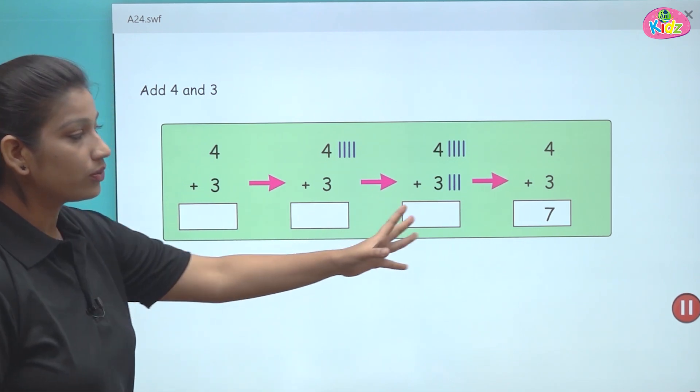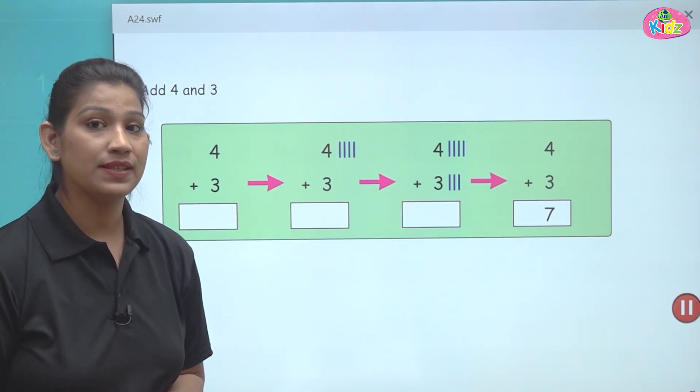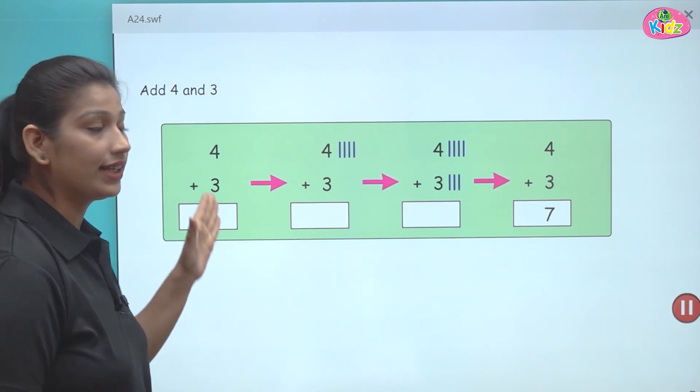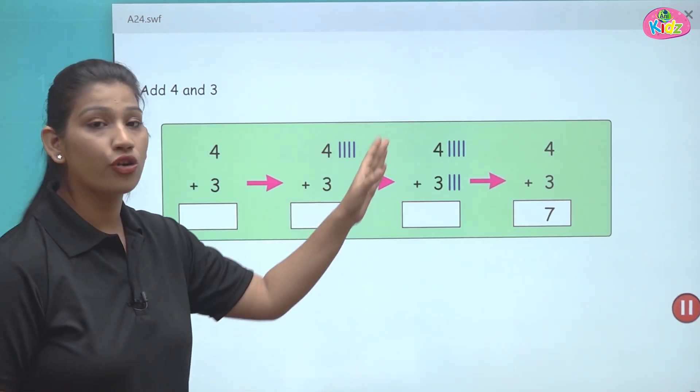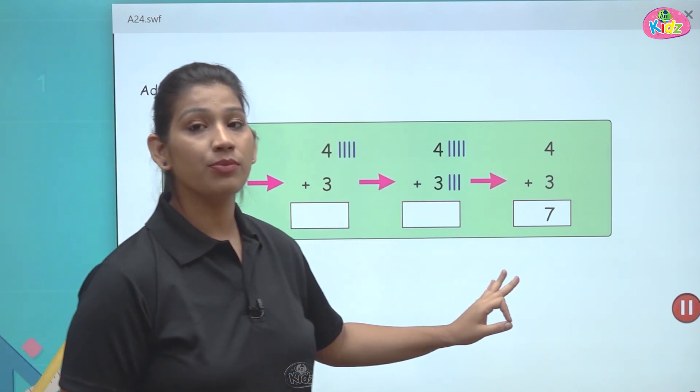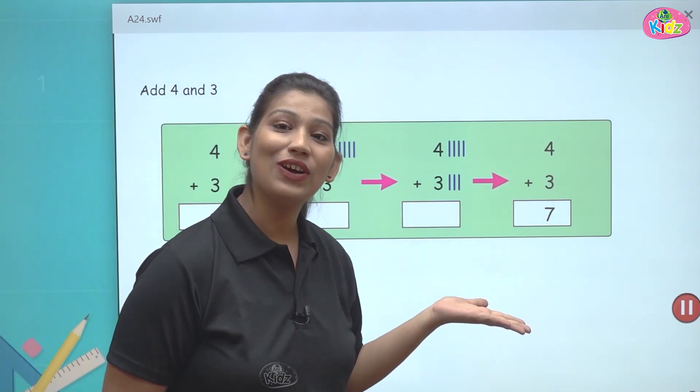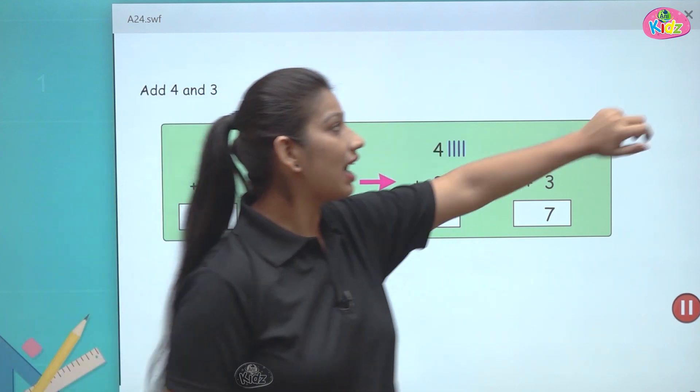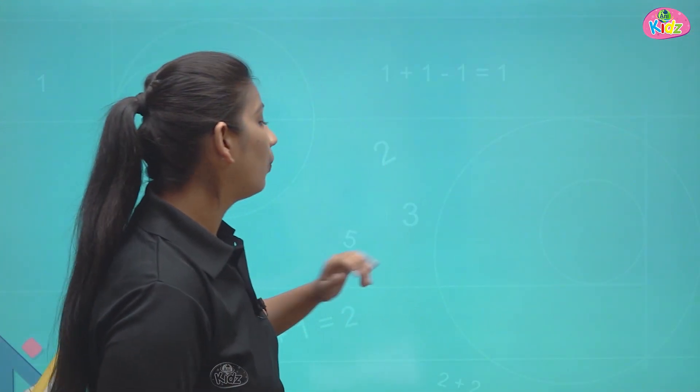You can see students by how many steps you can solve this question. You just have to write in the column. You have to draw the lines, the number specified. Count the total number of lines and you will get your answer. Let us understand this concept one more time.